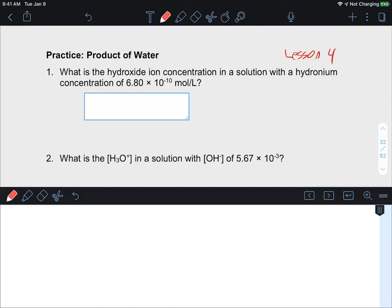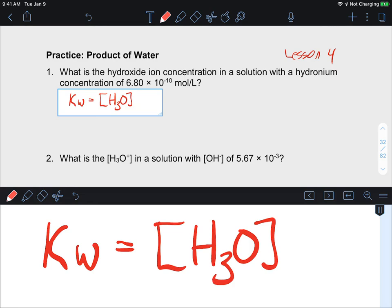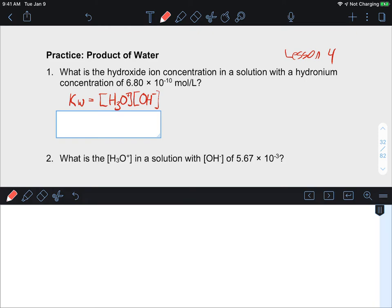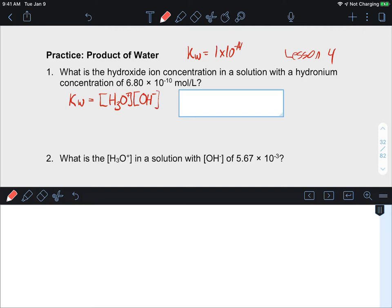Hello everyone, today we're going to be doing some practice questions on the product of water from lesson four. I'll just do a couple of these and we are going to be using this equation: Kw is the equilibrium product constant of water, and Kw is equal to 1 times 10 to the negative 14. This is just the natural constant of water at room temperature or at standard temperature and pressure.